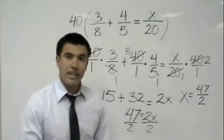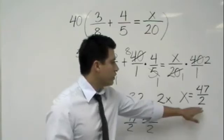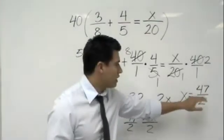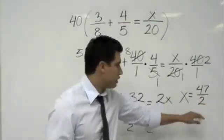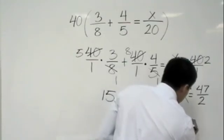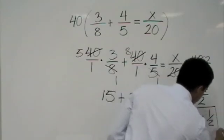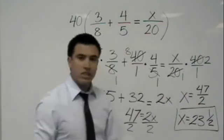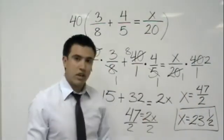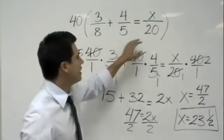Or, if you want to go ahead and put that into a mixed number, you go ahead and divide 47 by 2. Which would be x is equal to 23 and 1 half. If you want to go ahead and put that into a mixed number. So, there you go. We went ahead, solved for x, and we just eliminated the denominator.